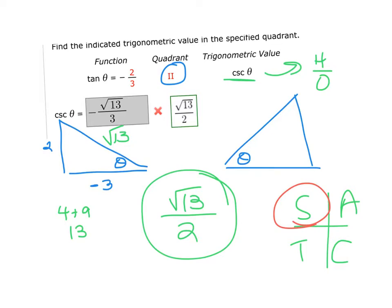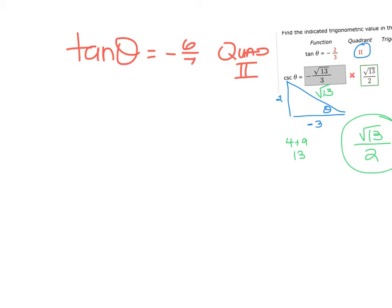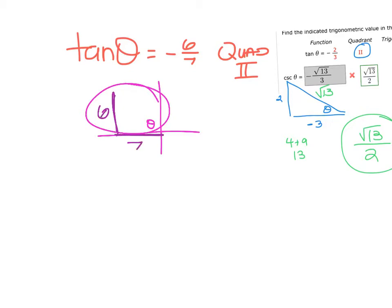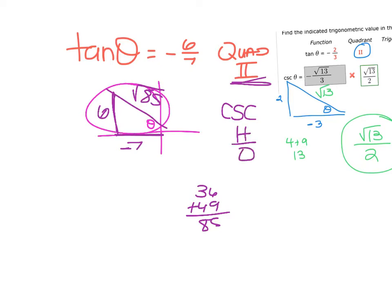For the related example with tangent = 6/7 in quadrant 2: opposite = 6, adjacent = 7. In quadrant 2, x is negative, so adjacent = −7. Hypotenuse = √(36 + 49) = √85. Cosecant = hypotenuse over opposite = √85/6. The quadrant tells you which side gets the negative sign; that's why they give you the quadrant.